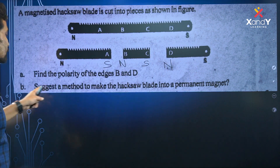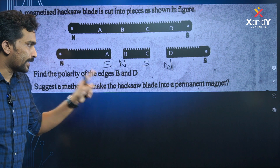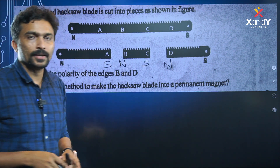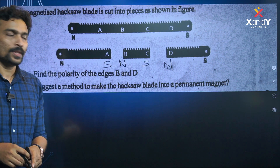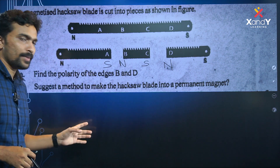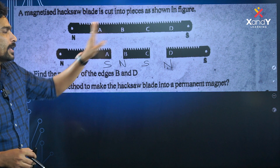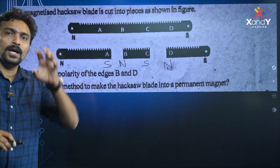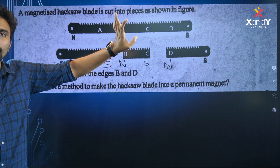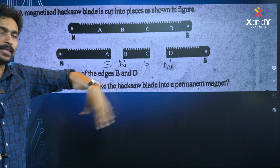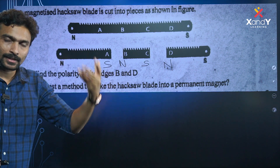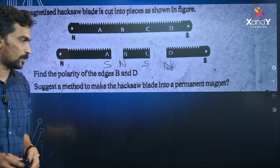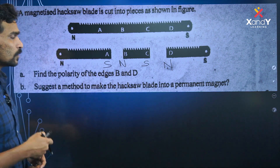Suggest a method to make a hacksaw blade into a permanent magnet. To give the hacksaw blade permanent magnetic property, use magnetization by rubbing — contact method.